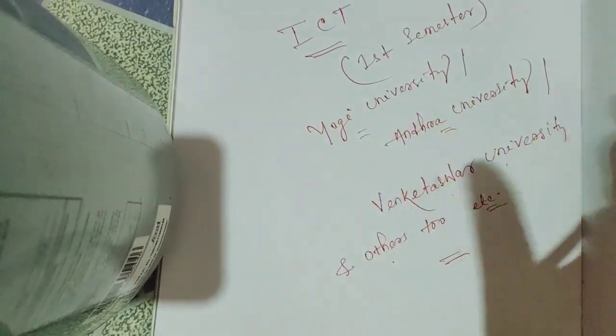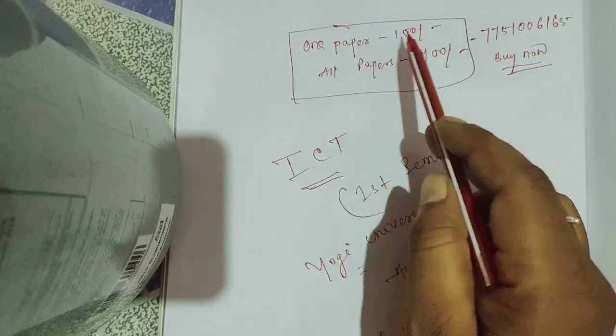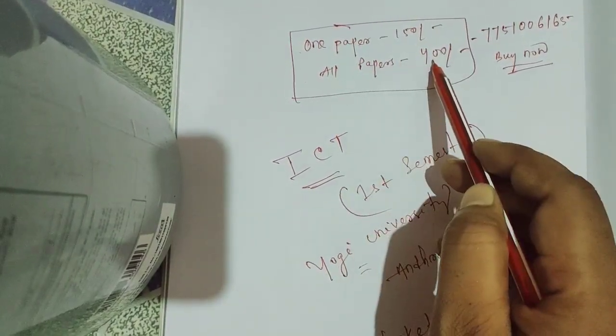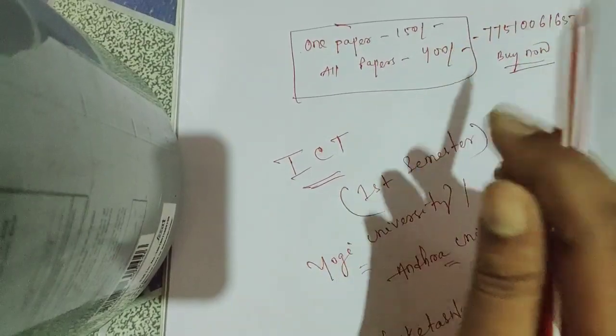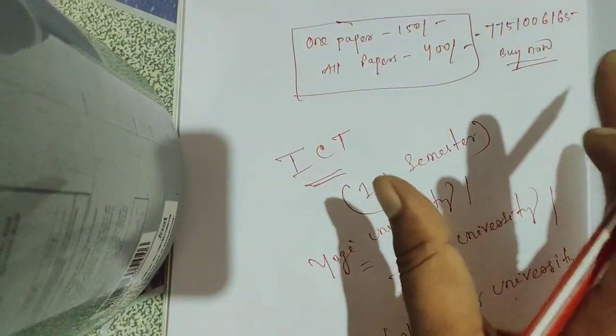You can buy the PDF - one panel for 150, all panels for 400. If you overlook or go through that, it will be sufficient to secure 80 percent marks.